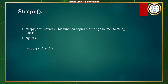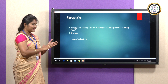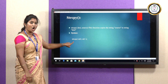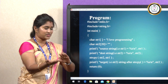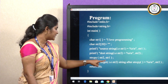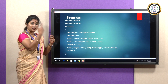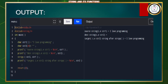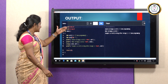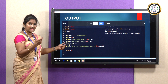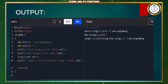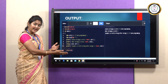Another function is strcpy — it is used to copy a string from one string to another. The syntax is strcpy(string2, string1). In the program, we declare two strings with their sizes and use strcpy to copy the source string to the destination string. The output shows 'I love programming' available in both string one and string two.